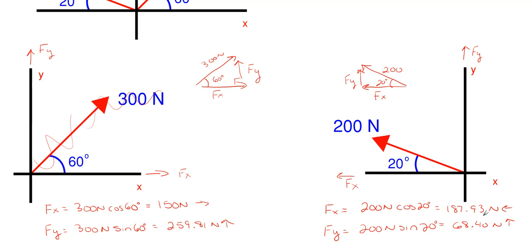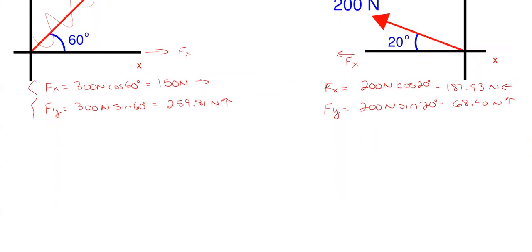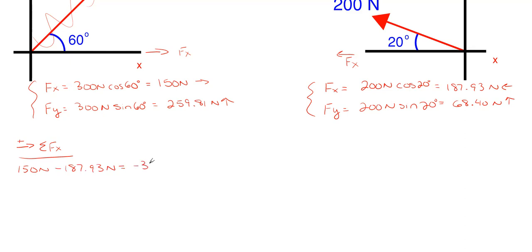Why break up these forces? We are going to take all the Fx and Fy components and sum them in each direction to get a final total. Summing forces in the x direction — taking rightward as positive and leftward as negative — we have positive 150 newtons minus 187.93 newtons, giving us −37.93 newtons, meaning 37.93 newtons net to the left.